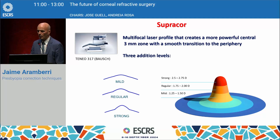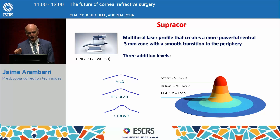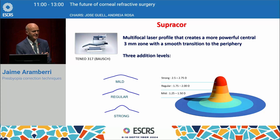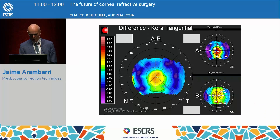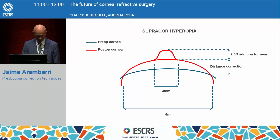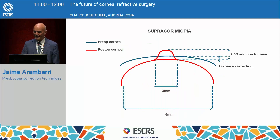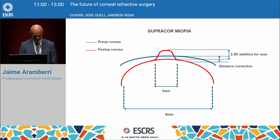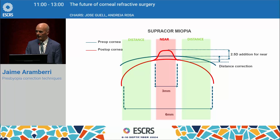Now I'll focus on SupraCore by Bausch & Lomb with the Ténéo laser, which is a multifocal laser profile that creates a more powerful central three-millimeter zone with a small transition. It does something really similar to PresbyMax, with three additional levels: mild, regular, and strong. In hyperopia, we are steepening the central cornea and steepening even more the very central three millimeters — that will be the add part for near. In myopia, we flatten the whole cornea but steepen the central part to provide that addition.